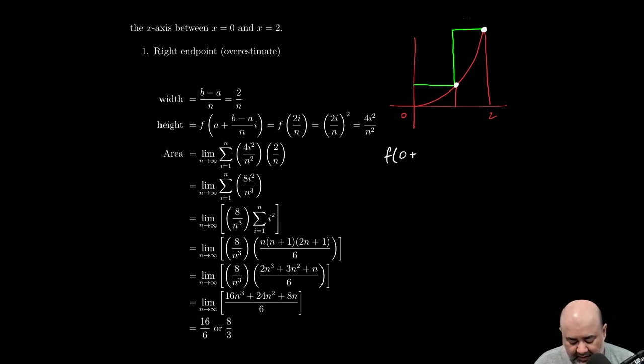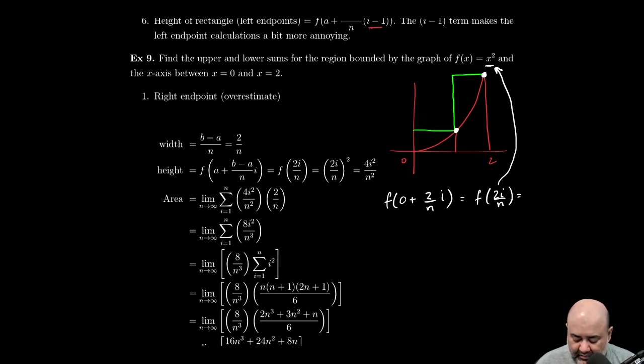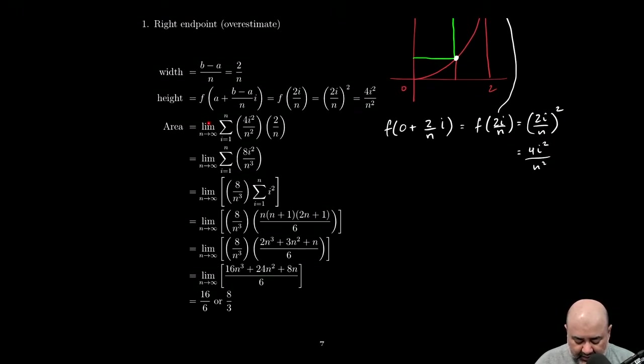So earlier we said that the height can be given by this function: the f of the lower limit, which in this case is going to be zero plus b minus a over n, so that's delta n, that's the width we just found, 2 over n times i. Well, zero plus 2 over n i is simply f of 2i over n. If my function is f of x equals x squared and I need to find f of 2i over n, what I'm really doing is taking 2i over n and plugging it into my function. And if I do that, I'm going to get 2i over n squared, which is really 4i squared over n squared.